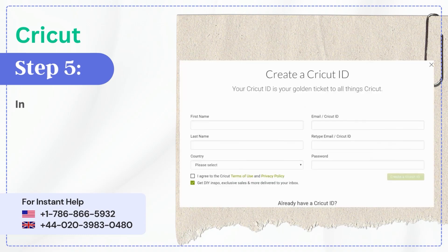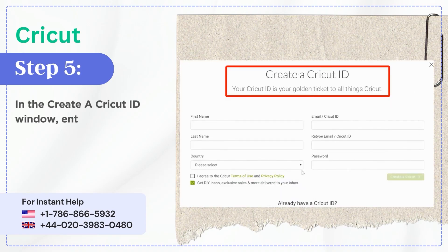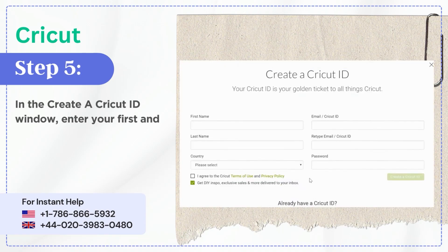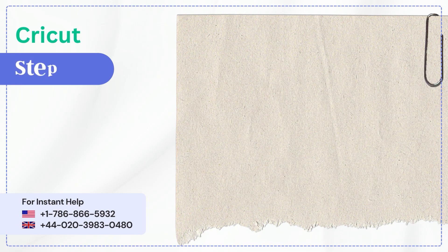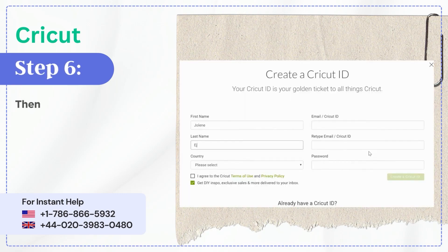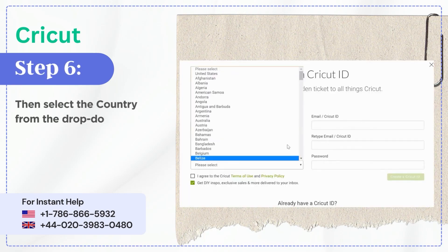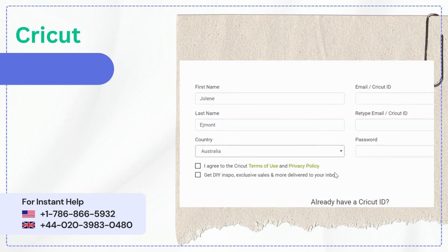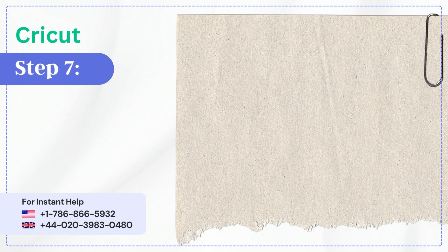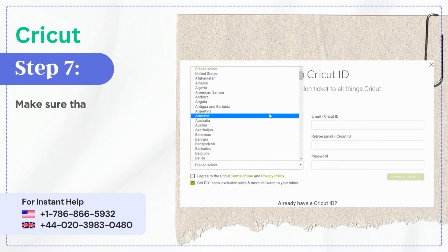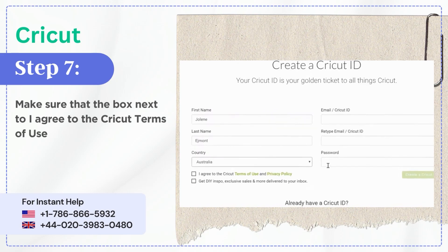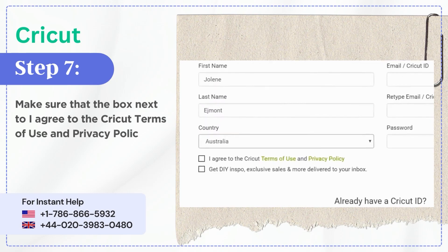Step 5: In the Create a Cricut ID window, enter your first and last name. Step 6: Then select the country from the drop-down menu. Step 7: Make sure that the box next to 'I agree to the Cricut Terms of Use and Privacy Policy' is checked.